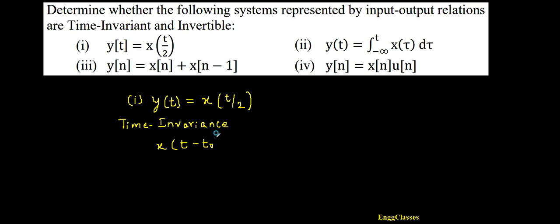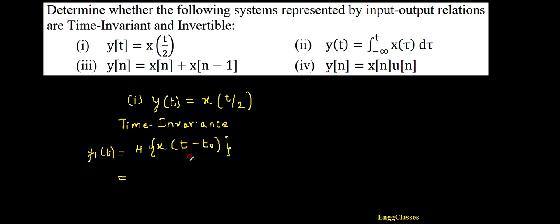I take the shifted input x(t - t₀) and give it to the system with operator H, and I get the output, which I call y₁(t). Now, what is the output for such an input? That depends on the nature of the system. The nature of this system is: wherever it finds t, it replaces that with t/2.